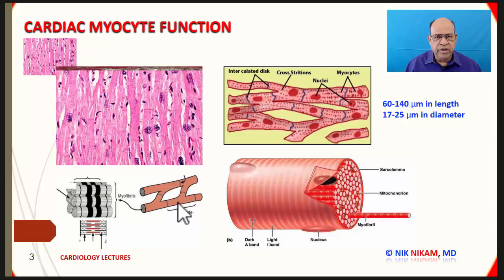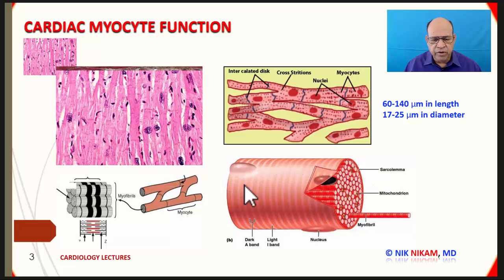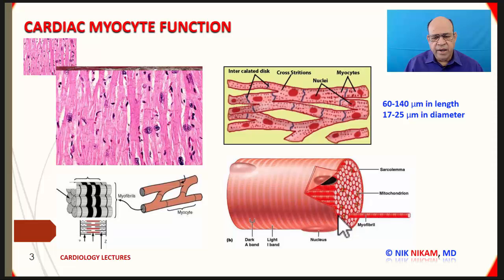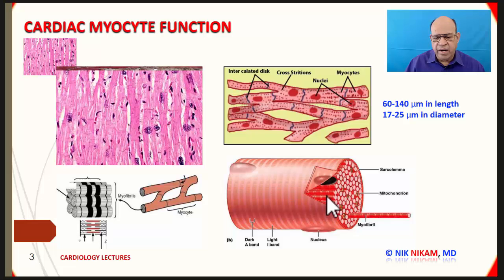If we look inside one of these myocytes, they are rounded cylindrical structures. The outer layer is the sarcolemma, which forms the membrane, and inside we have numerous longitudinal muscle fibers known as the myofibrils. Inside the myocyte we also have the mitochondria, along with an interstitial network that acts as a glue to bring all the myofibrils together and provides channels for electrolytes and propagation of electrical impulses. One characteristic of a myocyte is the alternating dark and light bands.